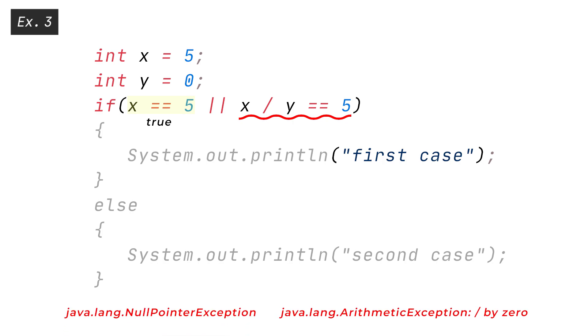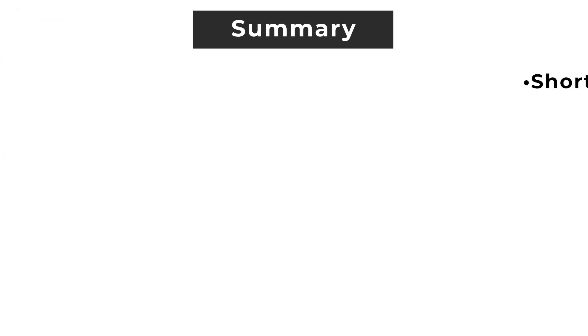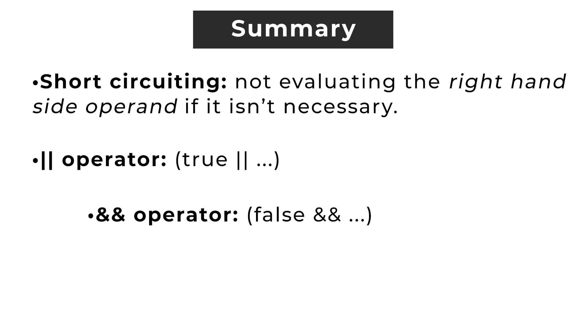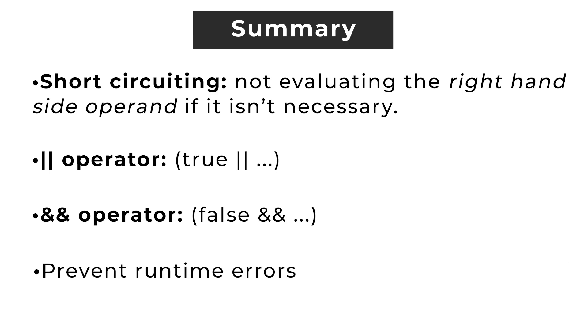To summarize, short-circuiting means not evaluating the right-hand side operand if it isn't necessary. The OR OR operator can be generalized to short-circuit whenever a condition is true OR OR anything, while the AND AND operator can be generalized to short-circuit whenever a condition is false AND AND anything. Finally, with this information, we can prevent runtime errors within our code. Thanks for watching.